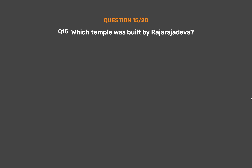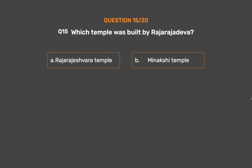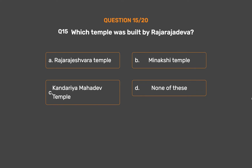Question No. 15: Which temple was built by Raja Raja Deva? Option A: Raja Rajeshwara temple. Option B: Meenakshi temple. Option C: Kandariya Mahadeva temple. Option D: None of these.